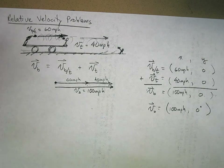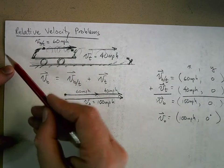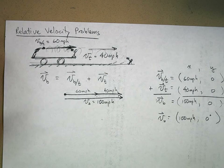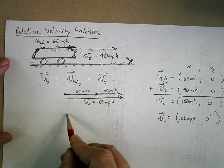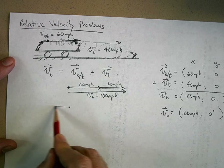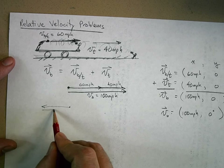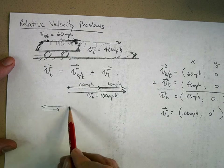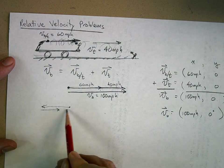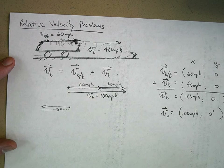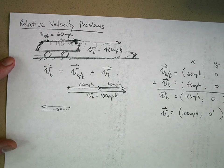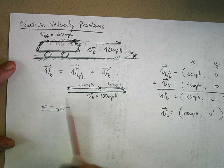What if Garrett decided to throw the ball in the opposite direction — to the left instead of to the right — while the train is still moving 40 miles per hour to the right? In that case, the velocity of the ball compared to the train would be negative 60 miles per hour, while the velocity of the train is positive 40 miles per hour. So the result would be negative 20 miles per hour — that is, 20 miles per hour at an angle of 180 degrees.